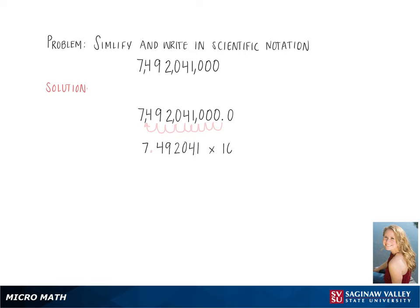Then we can multiply by a base of 10, and the exponent is how many times we moved the number over. So in this case, our exponent is going to be 9.